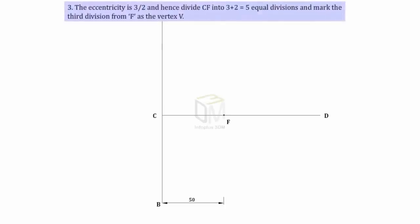As the eccentricity is 3 by 2, divide the line segment CF into 3 plus 2, 5 equal divisions and mark the third division from F as the required vertex V.